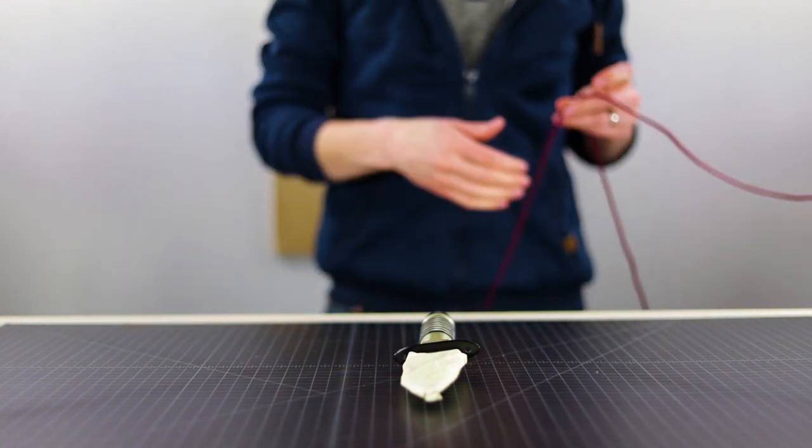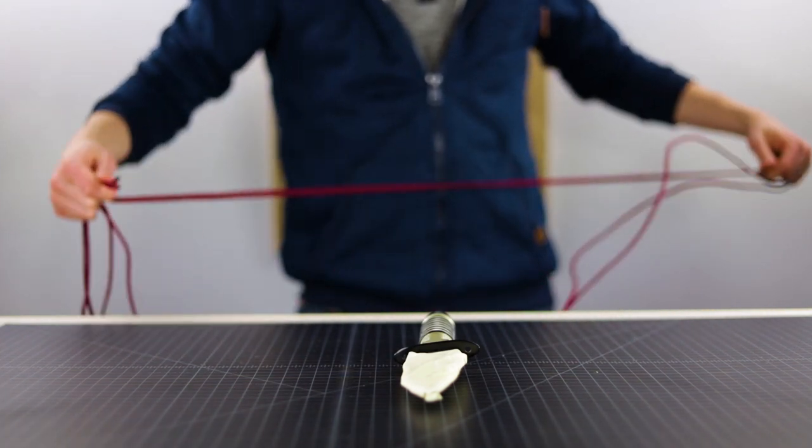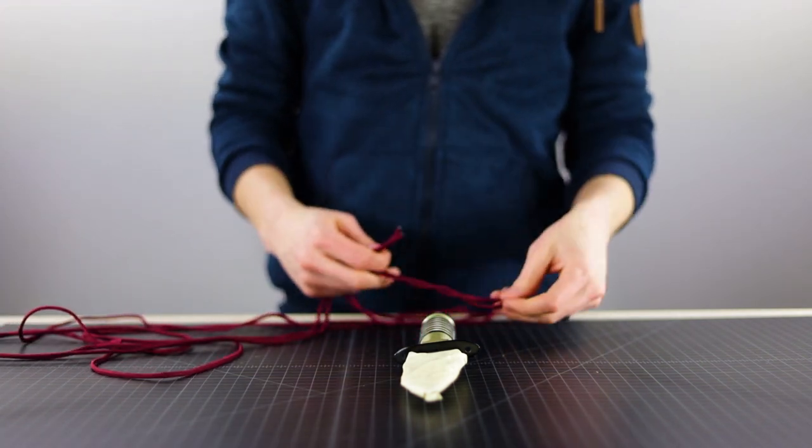You'll need about 15 feet of paracord, maybe a little bit more depending on the size of your handle. But start by finding the middle, like on most of our projects, and then just hook it underneath at the top of your knife.